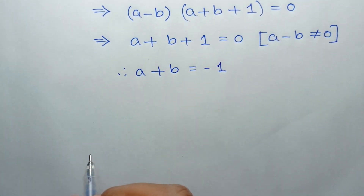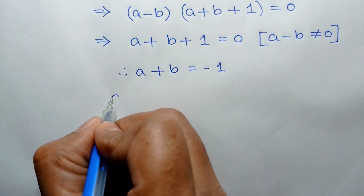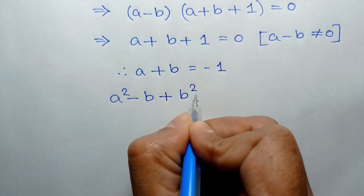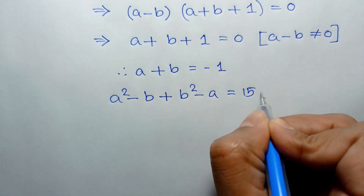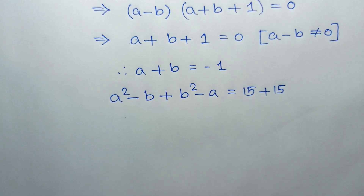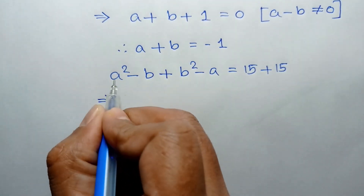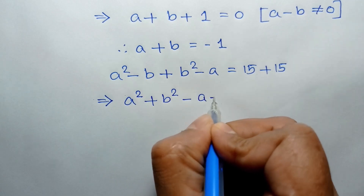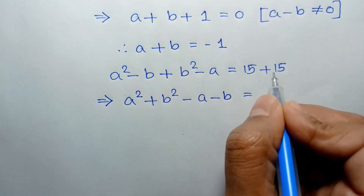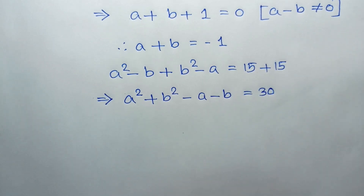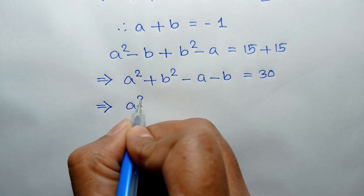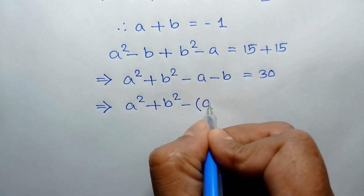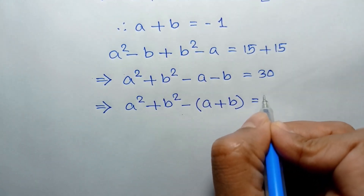Now, if we add equation 1 and equation 2, we can write A squared minus B plus B squared minus A is equal to 15 plus 15. Rearranging, A squared plus B squared minus A minus B is equal to 30.